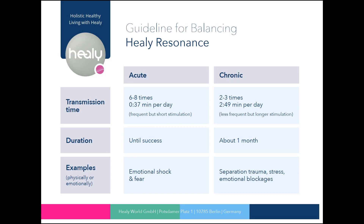The lists for chronic topics are usually sent less frequently but for a longer period of time. In these cases, you can send a list two to three times per day into the client's information field for 2 minutes and 49 seconds for about a month. If the condition of the client shows little change after this period, you can activate an additional analysis list again for one month.